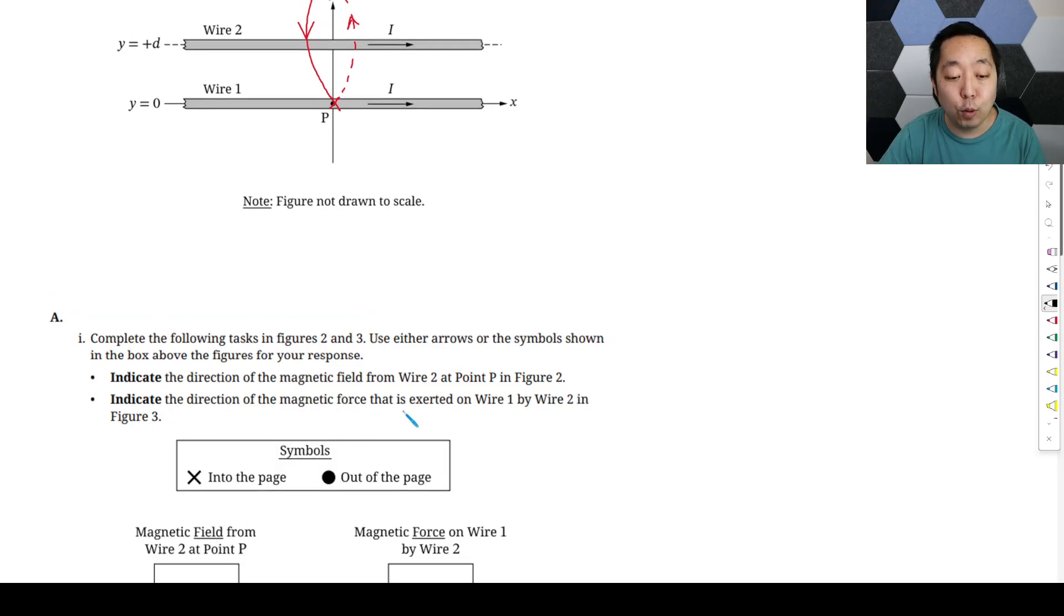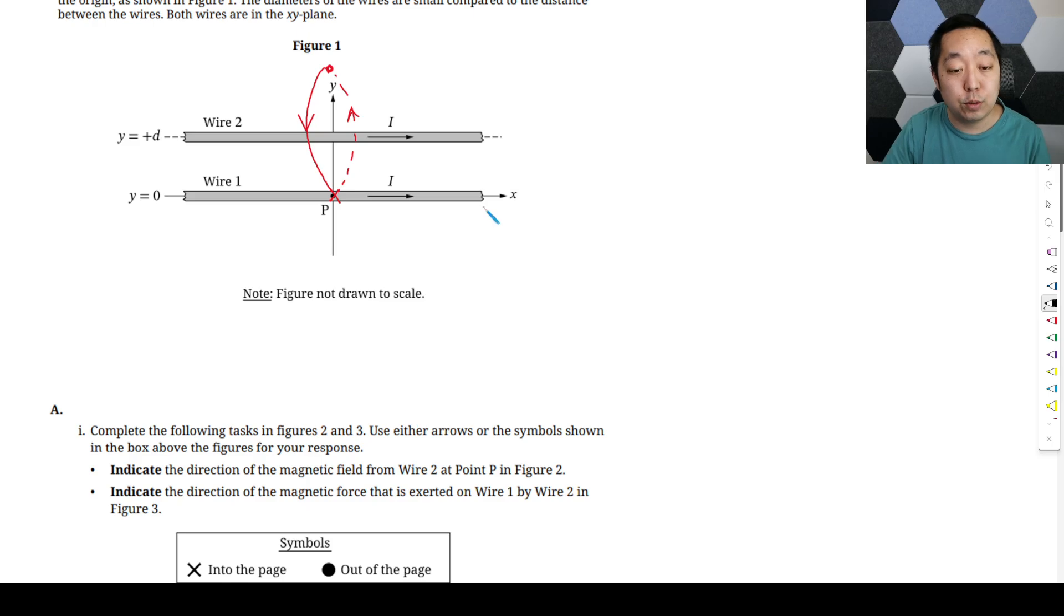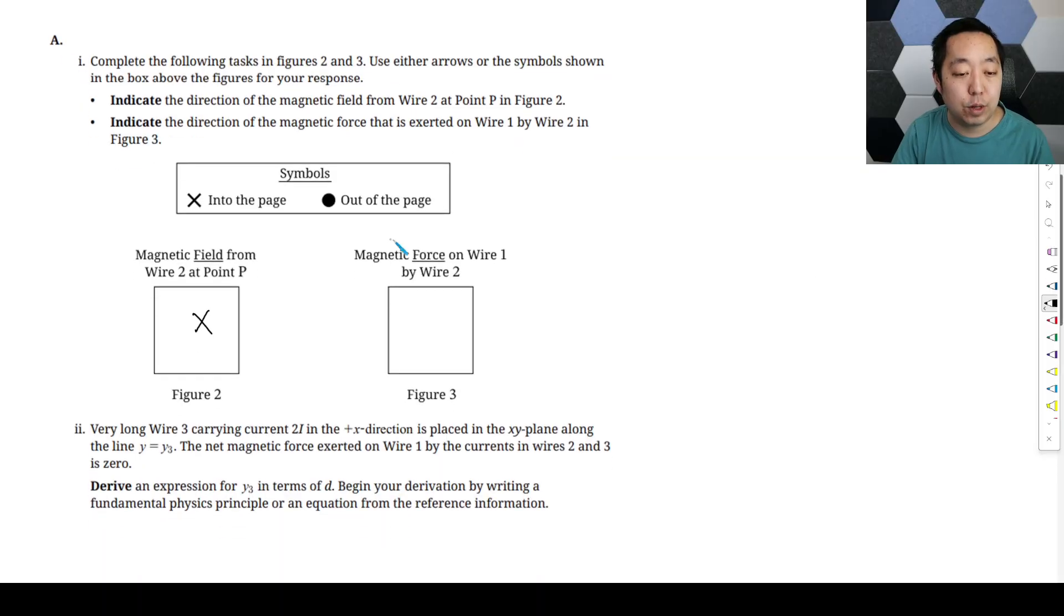Indicate the direction of the magnetic force exerted on wire 1 by wire 2. That's where we're going to use the magnetic force as IL cross B, because we have a wire through a magnetic field. Our index finger points to the right, that's the direction of the current. Our middle finger points in the direction of the magnetic field, so it's going into the page. So my thumb points up, and that is the direction of the force. My answer is going to be a straight up magnetic force arrow like that.